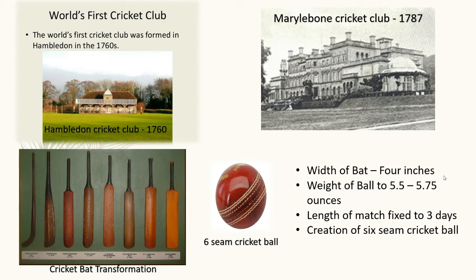The width of the bat was fixed to four inches. The weight of the ball was also fixed — it should be around five and a half to five and three-quarter ounces. In 1774, there were still more changes: major matches, which were earlier played over five days, were now fixed to three days. The creation of the six-seam cricket ball was also witnessed during that year.